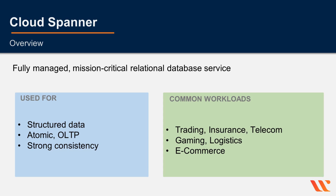Cloud Spanner is a fully managed, mission-critical relational database service. It's designed to provide a scalable online transaction processing — OLTP — database with high availability and strong consistency at global scale. It's used for things like high-frequency trading systems and e-commerce logistics systems.